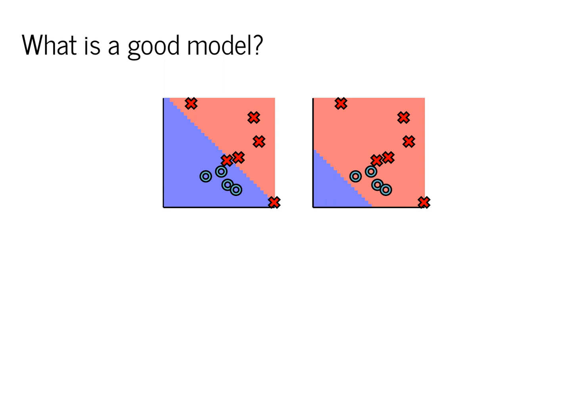We've seen that we are able to split up our space into red and blue sections. These correspond to the model making a decision about future points. However, given this decision, we also need to think about how good the model was at classifying the points we were given. In some sense, this comes down to deciding whether one model is better or worse than another.